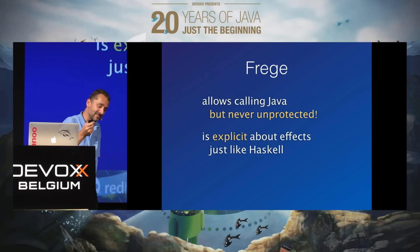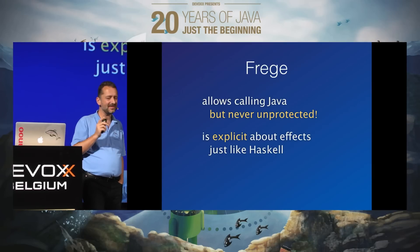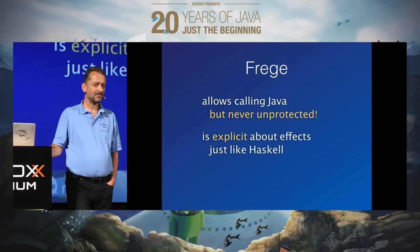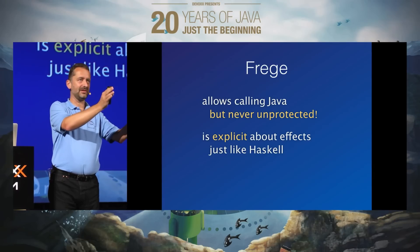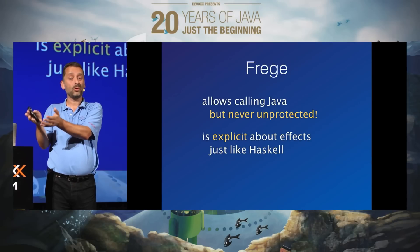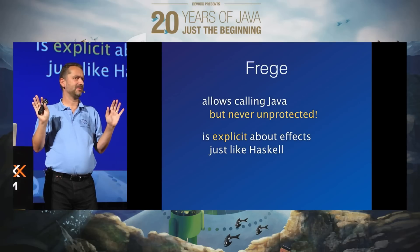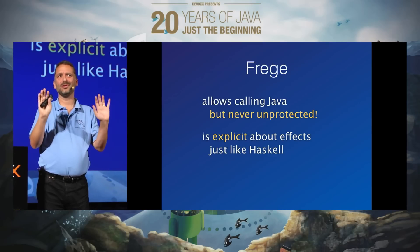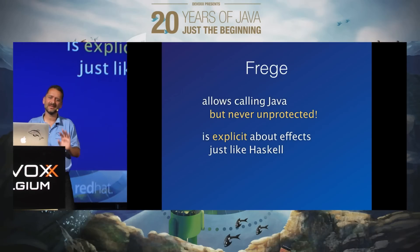This kind of declaration is the key distinction between Frege and many other JVM languages. When you call from Frege into Java, you can never do it unprotected. You are just as explicit about effects as you are in Haskell. All other popular languages on the JVM say: we have these guarantees, but once you call into Java, no guarantees whatsoever. How bad is that? How often do you call into Java? Every second line. So this is a key distinction.